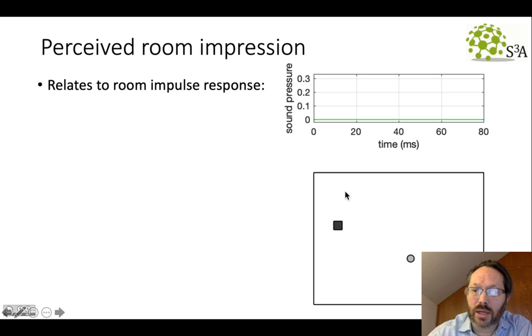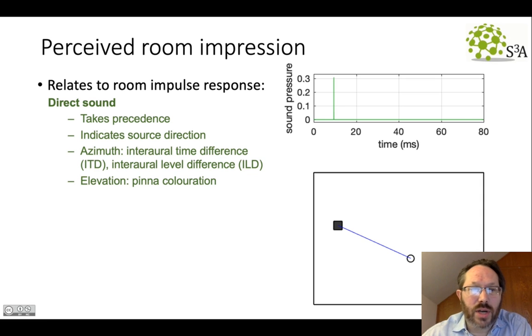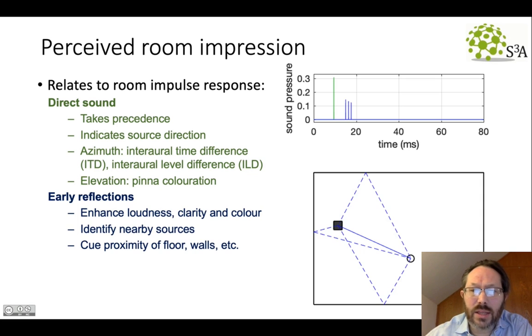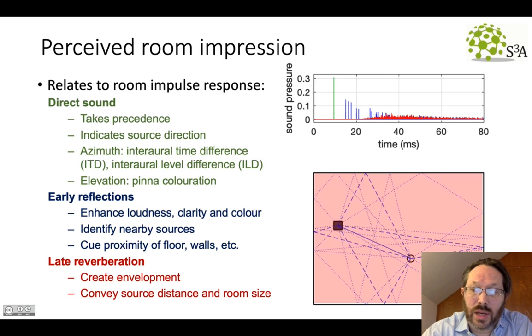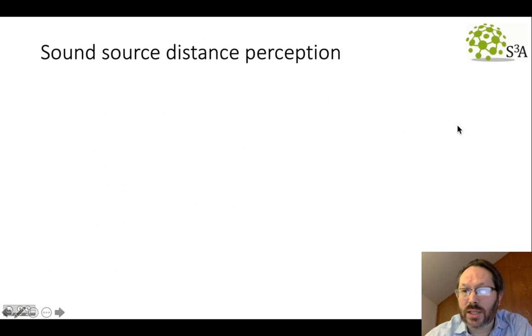This begins with the room impression and starting from a spatial room impulse response, we can see what the main components are. I've got in plan view a cartoon of a sound source and a listener and an impulse response that we'll build up above. The direct sound comes in, takes precedence and indicates the source direction. In those early reflections, we enhance the loudness and clarity of the sound and give some cues to those key reflecting surfaces. We have a diffuse sound field in that late tail that creates a sense of envelopment, source distance and also some cues to the room size.